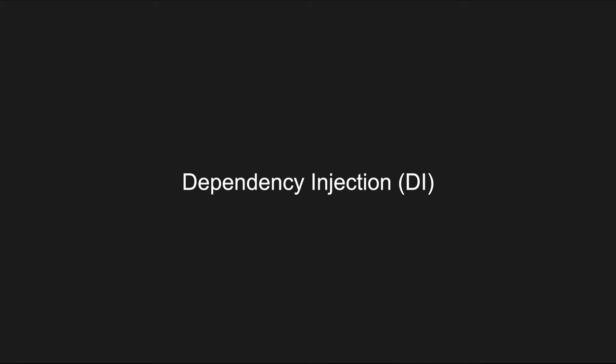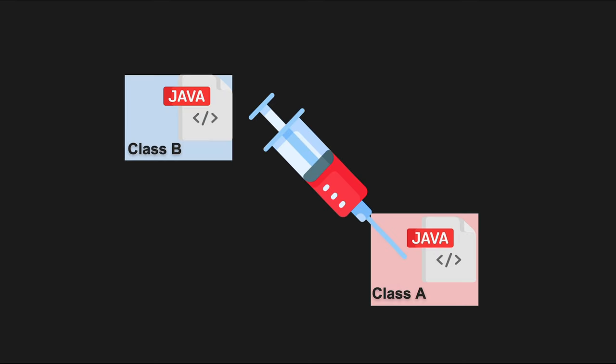Let's talk about another key concept in Spring: dependency injection. This deals with how components or beans obtain their dependencies. Instead of the bean creating its dependencies, the dependencies are injected into the bean. With this, components are not tightly bound to their dependencies, which promotes flexibility and maintainability. In addition, components can be reused in different contexts without modification.